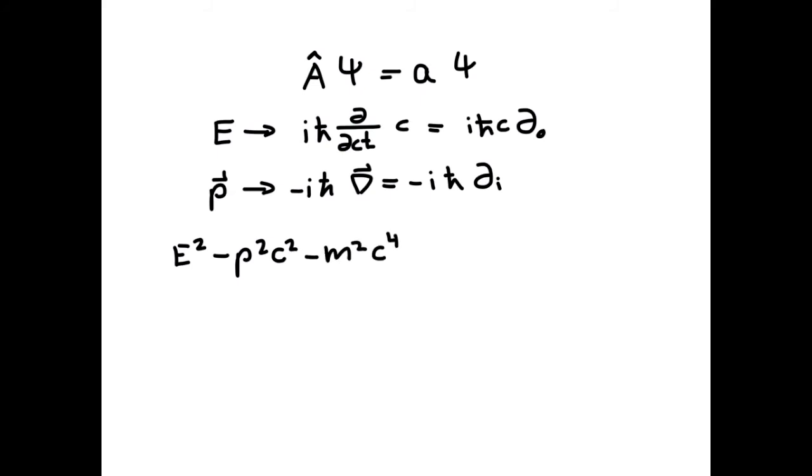So e squared minus p squared times c squared minus m squared times c to the fourth becomes minus h bar squared times c squared times twice the zeroth derivative. And because exactly the same arises for the spatial derivative, we can combine it into a four-derivative. Minus the rest, which is m squared times c to the fourth.